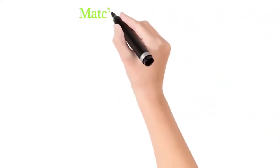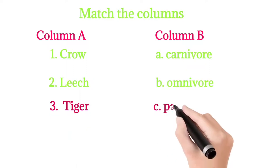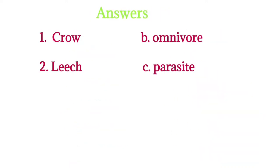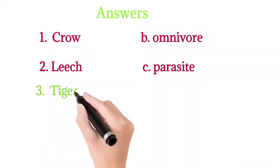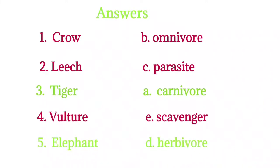Next, match the columns. Column A: crow, leech, tiger, vulture, elephant. Column B: carnivore, omnivorous, parasite, herbivorous, scavenger. Answers: crow is omnivorous. Leech is a parasite. Tiger eats flesh of other animals - that is carnivorous. Vulture is a scavenger. Elephant is a herbivore.